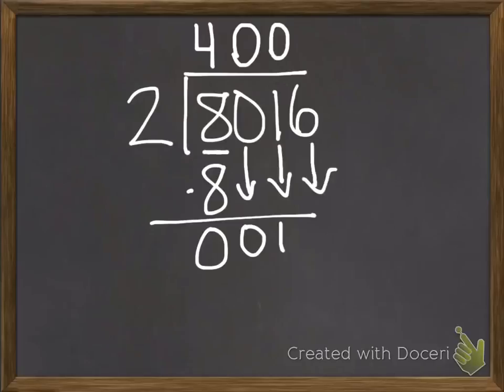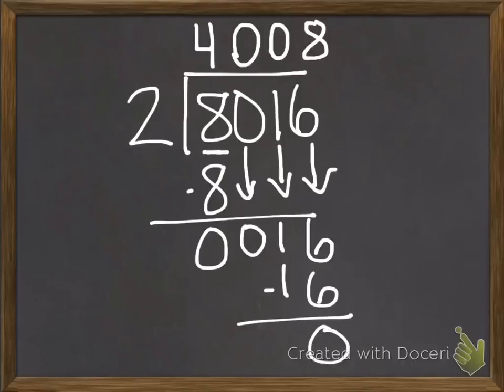That last number in your dividend. So now I have 16. 2 times what will give you 16? If you said 8, you were right. So let's put an 8 above that 6 in our dividend. 2 times 8 is 16 exactly, so we have no remainder left over in this problem. Notice how every single number in my dividend has a number above it in the quotient. You have to make sure that you have that.